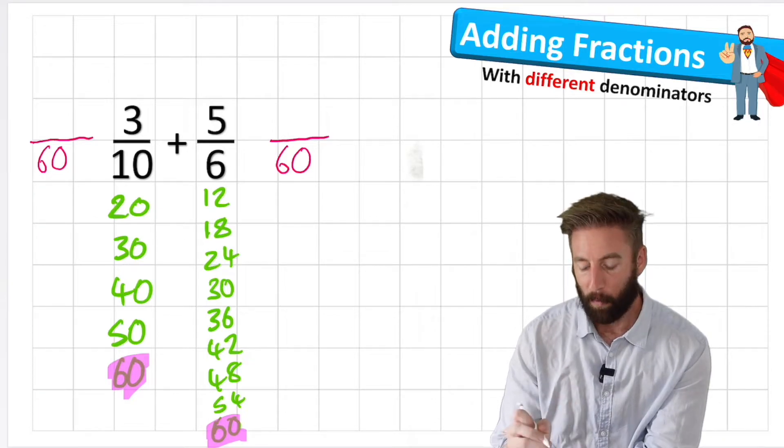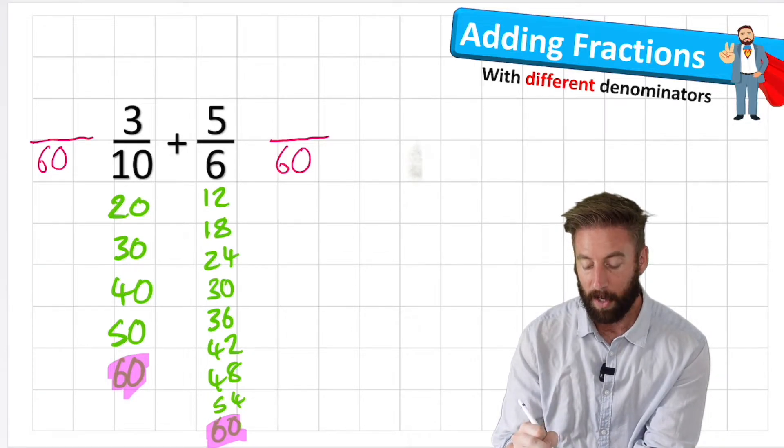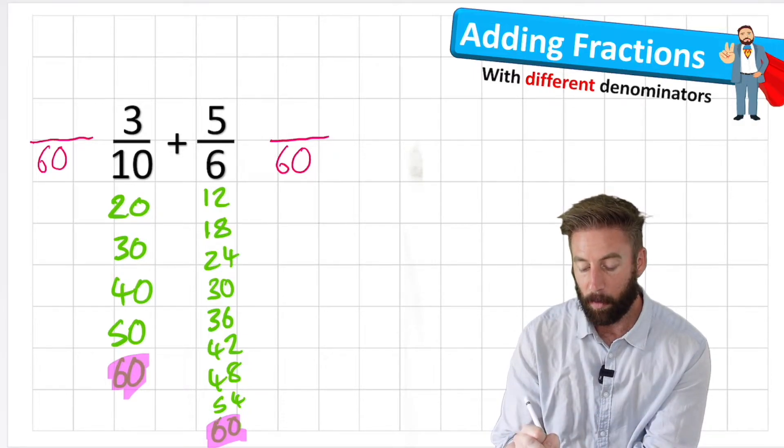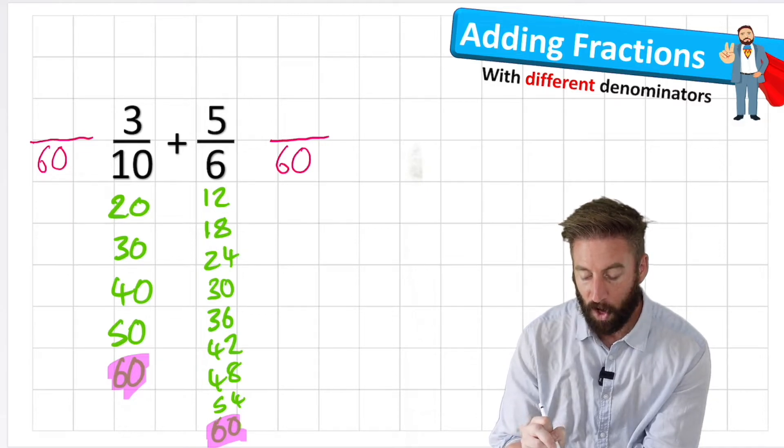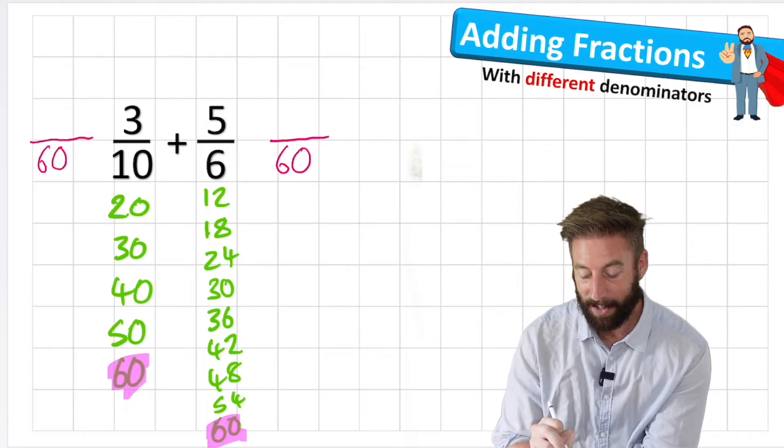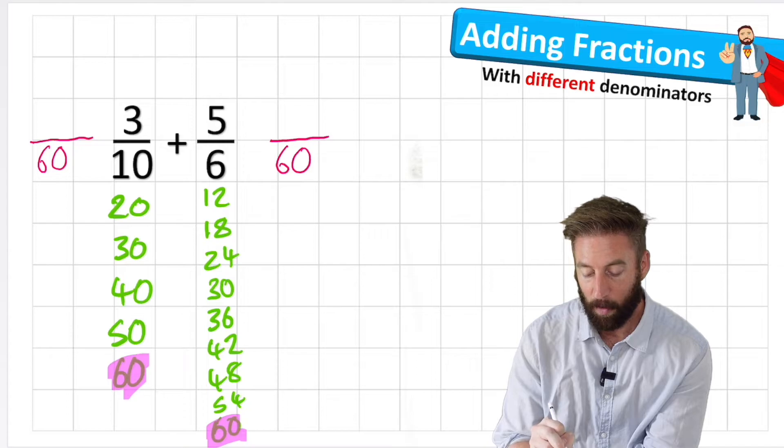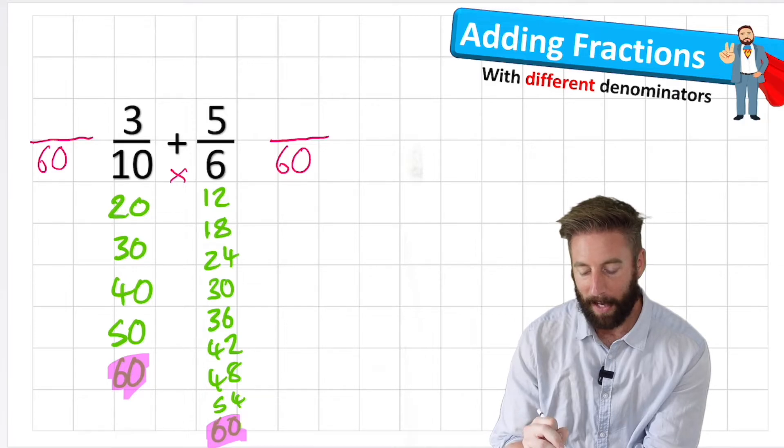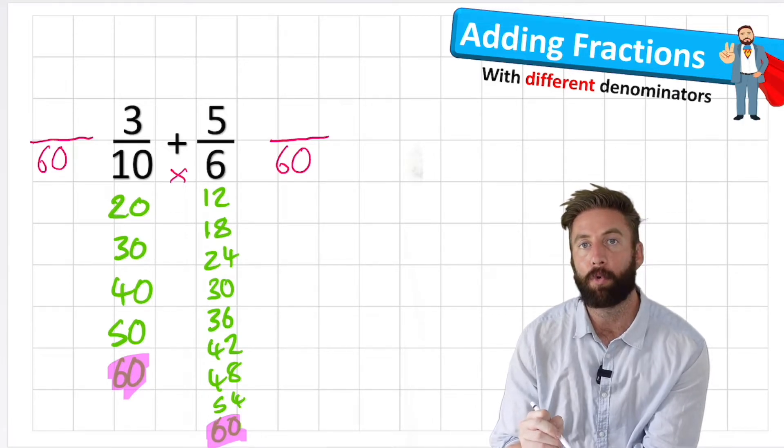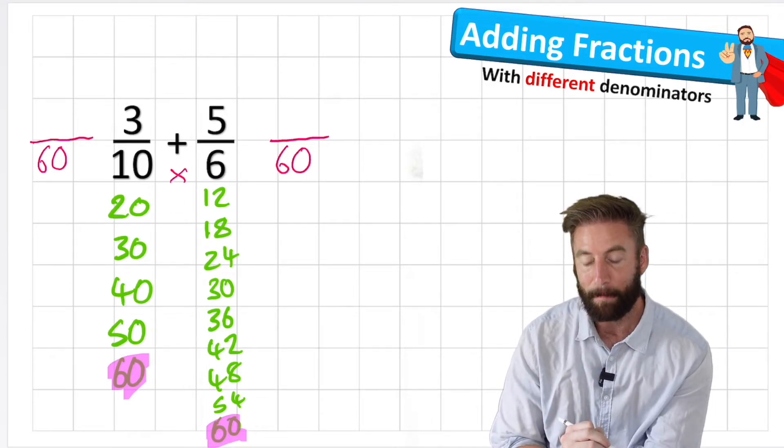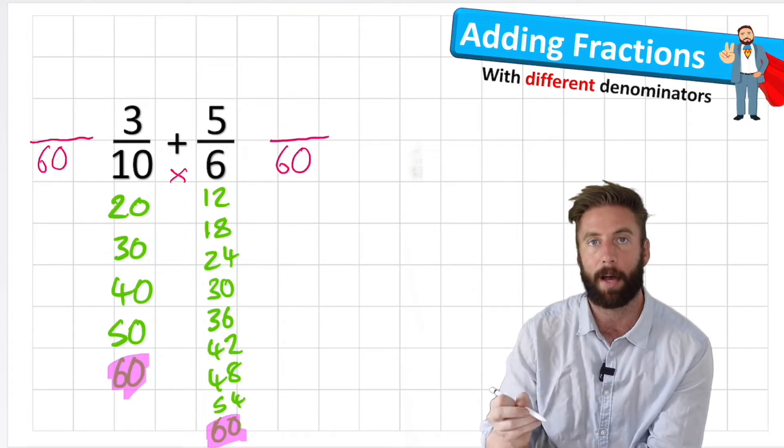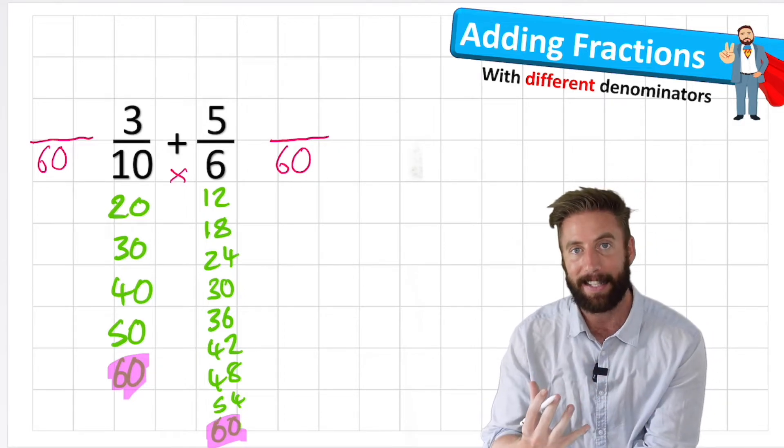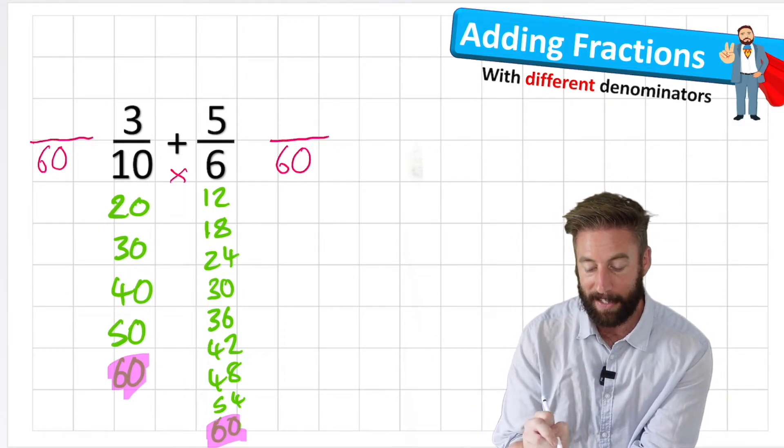But I want you to think about something. We've just had to do this whole process of finding the multiples and writing down all the multiplications of these two numbers and we end up with 60. Well watch this. If I just times my 10 times 6, what do I get? That's right, I get 60. So I didn't need to do this whole multiplication step. I can simply just multiply my two denominators together and I'm going to get a common multiple because 10 times 6 is always going to be a number that's in both the 10 times table and the 6 times table.